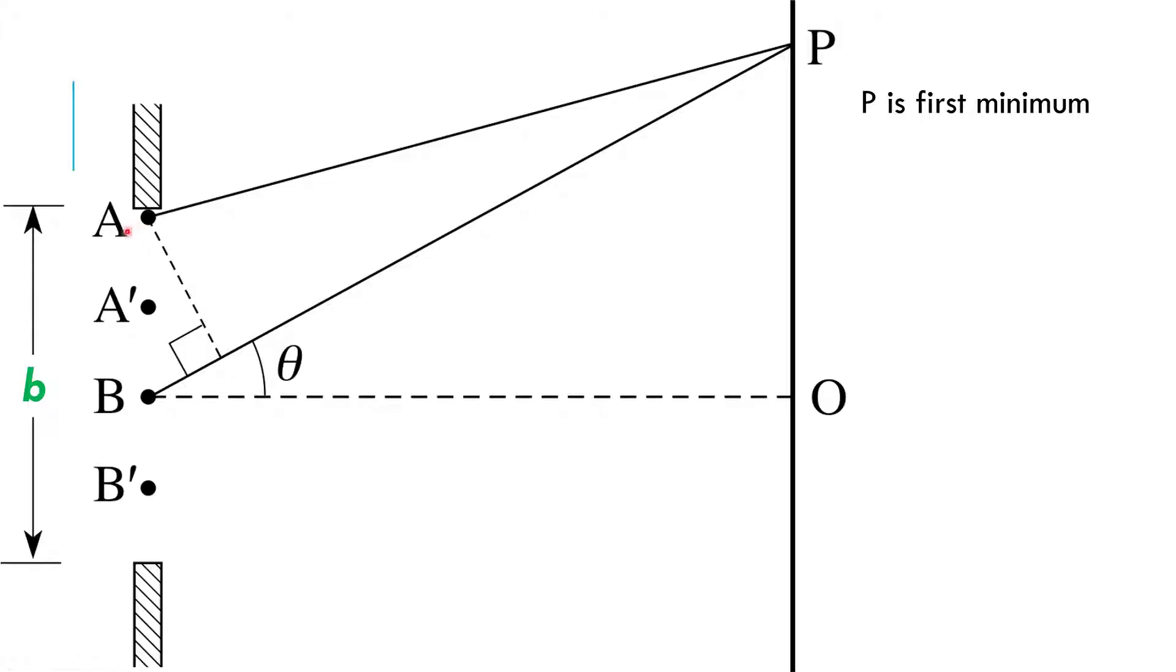So A, A prime, B, B prime all represent wavelets. The main concept is this. This is another kind of tricky one. But what we want to focus on is the minimum, the first minimum, because that's where destructive interference is happening. So that's probably one of the most straightforward places to look to come up with some math.